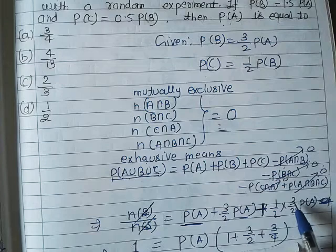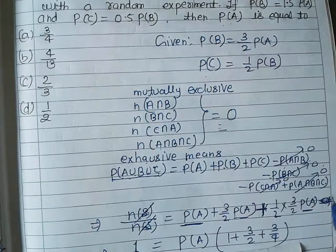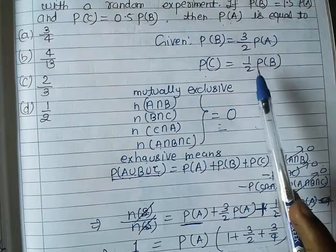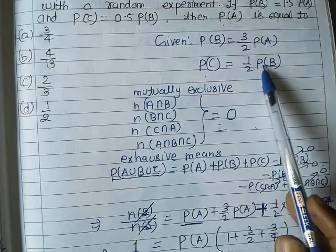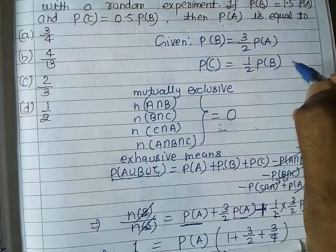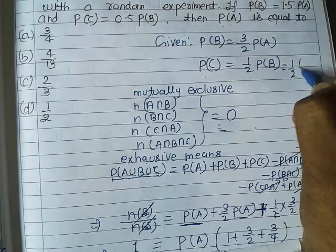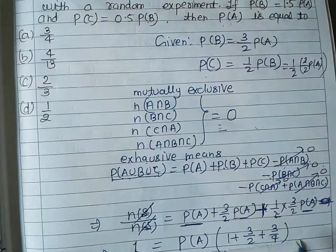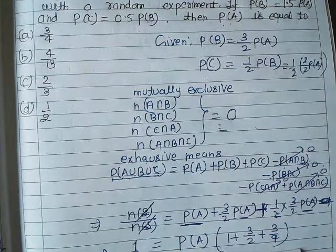So, 1/2 and 3/2 P(A). In C's place, we can put 1/2. This becomes 3/2 P(A). We can take P(A) common here. One by two, this will be 3/2 P(A). We can write P(A) and take it common.